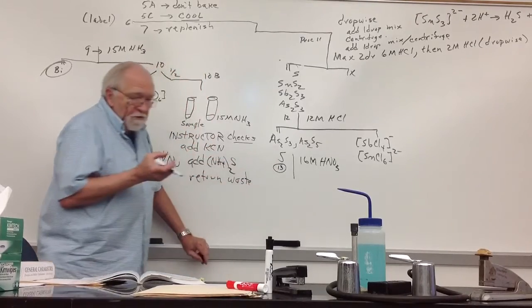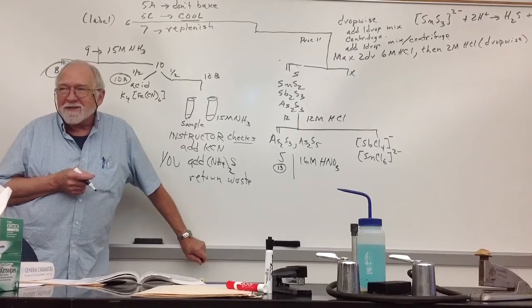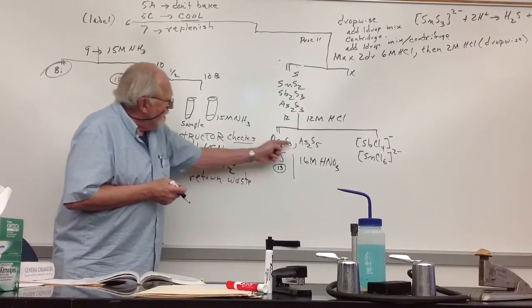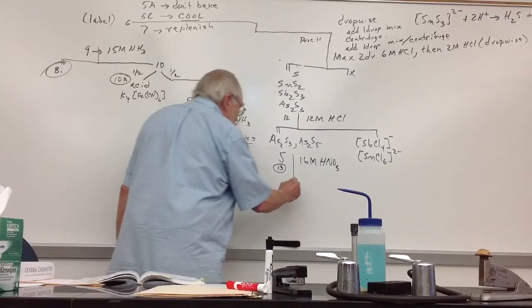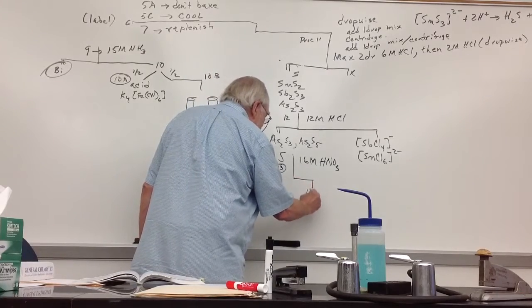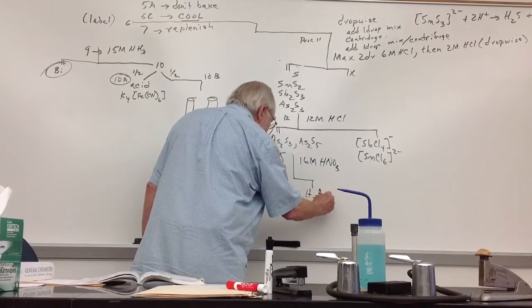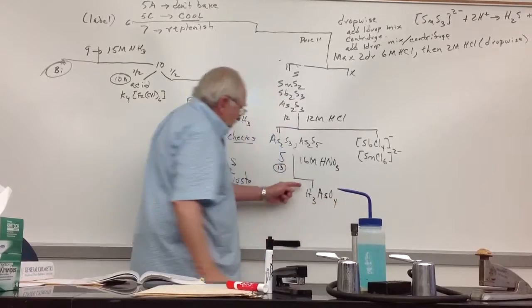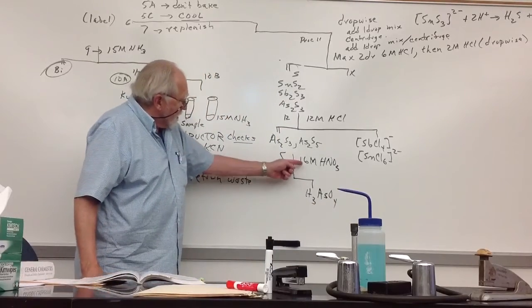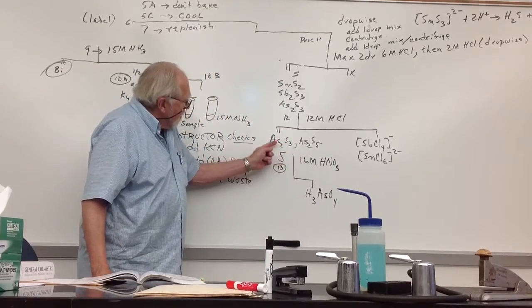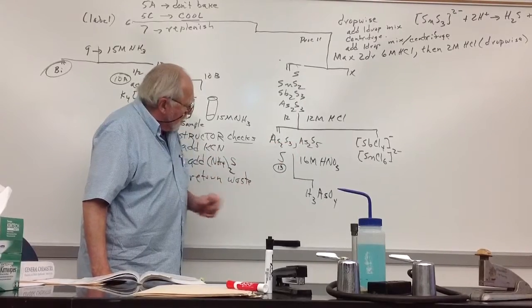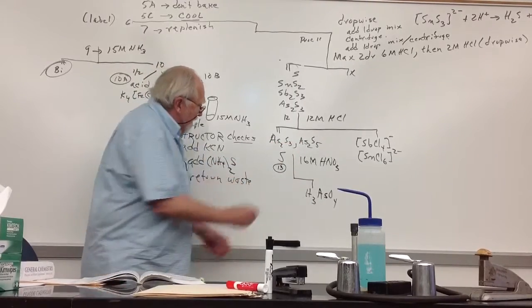So you're going to have sulfur in the bottom of the test tube. You're going to have sulfur at the top of the test tube, floating. And in between, you're going to have arsenate, which is in solution. Because the concentrated nitric acid converts arsenic 3 to arsenic 5 also. This is what's in the solution phase.